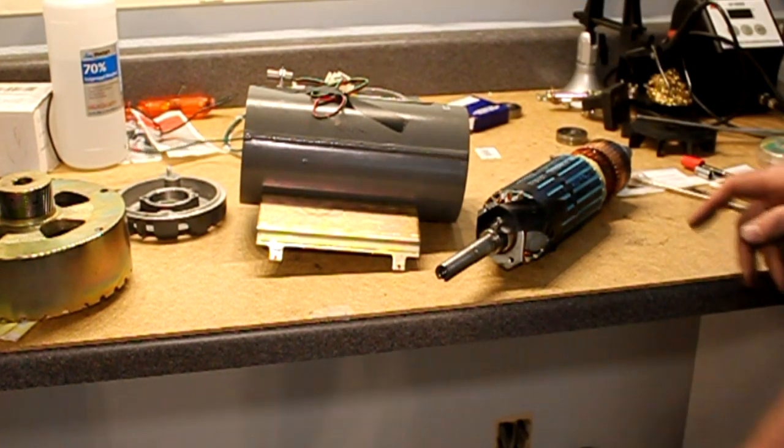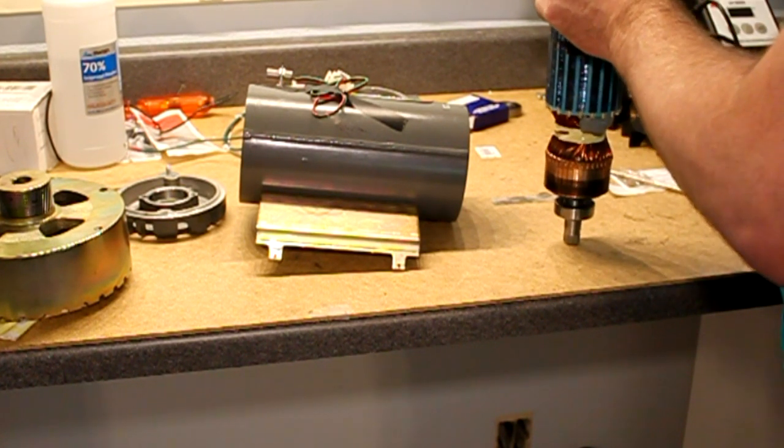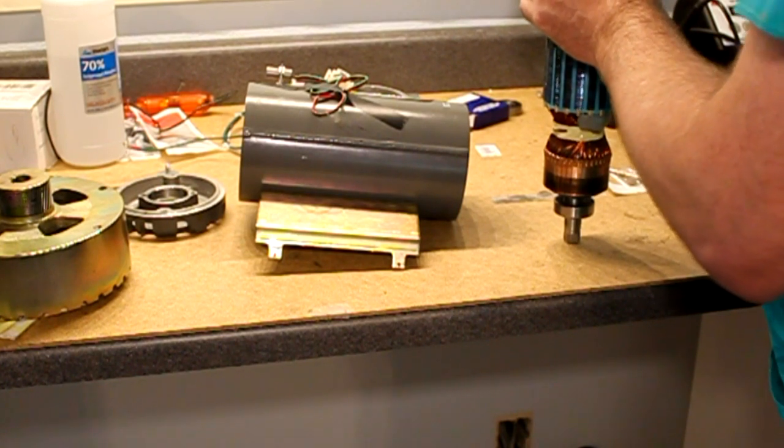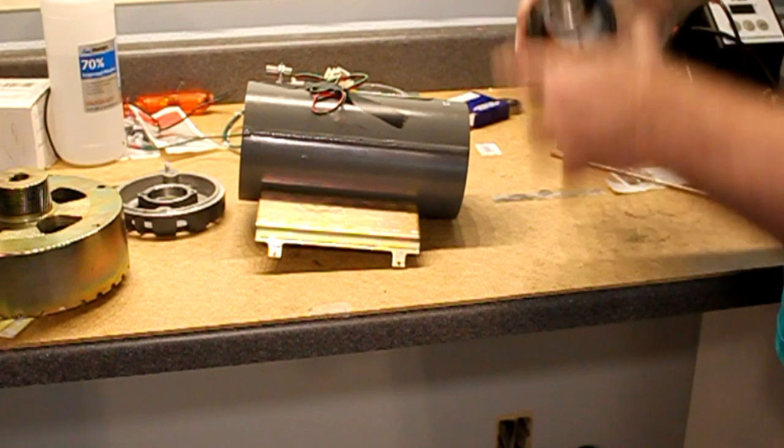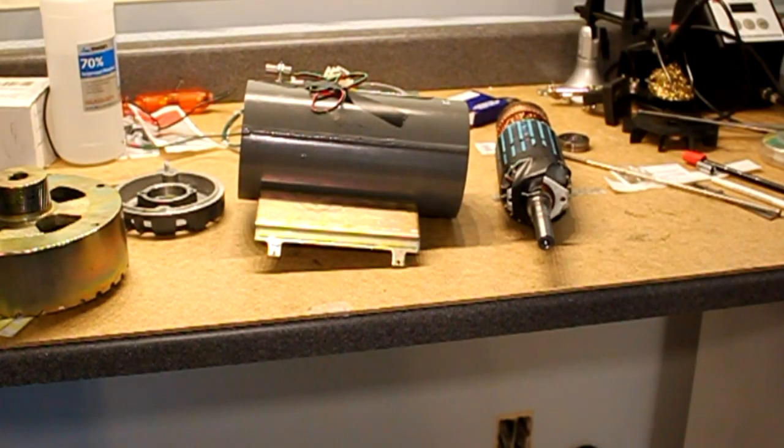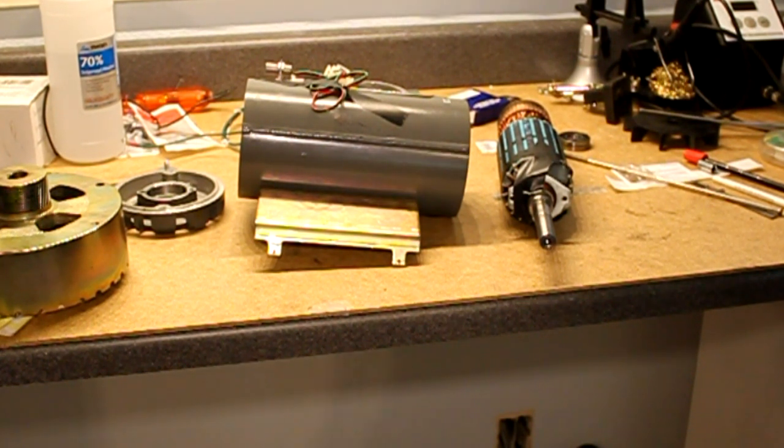I expect it's probably going to take a press to get the new bearing pressed back onto there. I may try using a piece of pipe and a mallet. We'll see. And it may take a press to get the flywheel back on too. Well, that is it. That is this Landis L7 motor all torn apart.